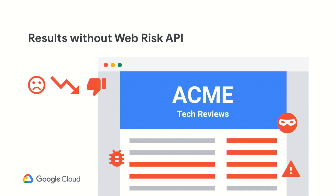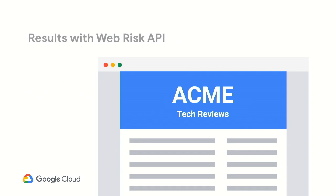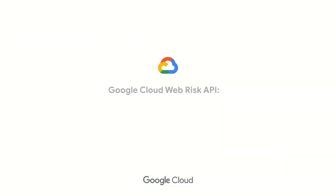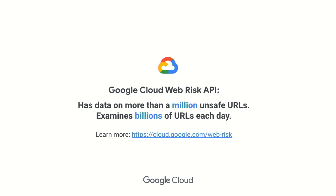Going back to our example: now let's say Acme Reviews has installed this and is starting to filter their sites. What will happen is they'll start to make sure their site is free of malicious content, the users return, and their growth can continue. So for any company that does content filtering or has large amounts of user-generated content, we highly encourage them to take a look at this WebRisk API. We actually launched this back at RSA, so it's available now at cloud.google.com/WebRisk. We have data on more than a million URLs from scanning billions a day.